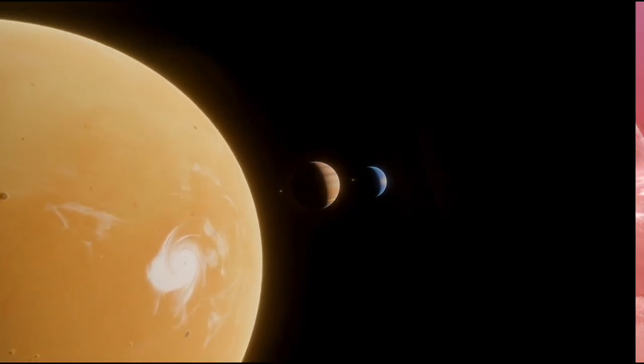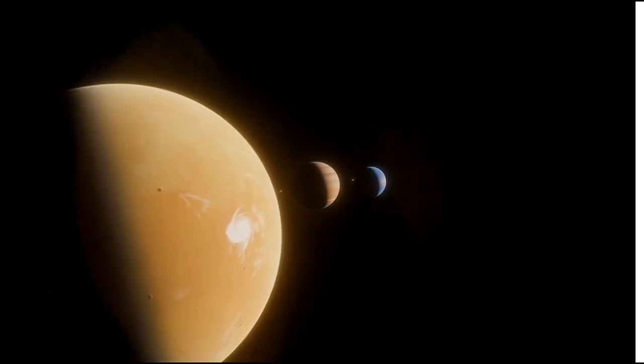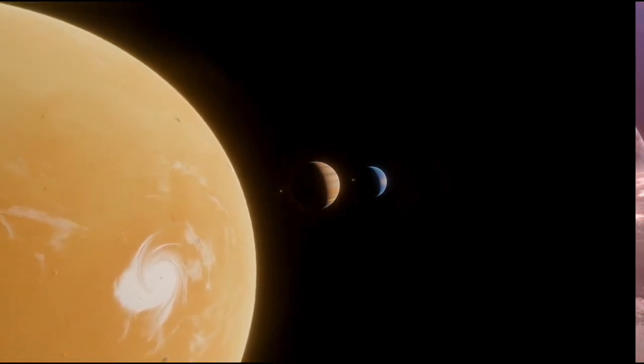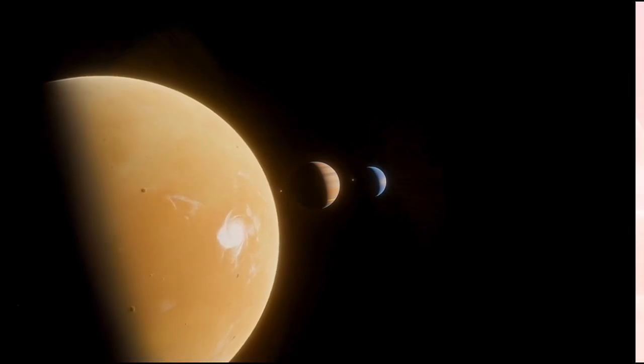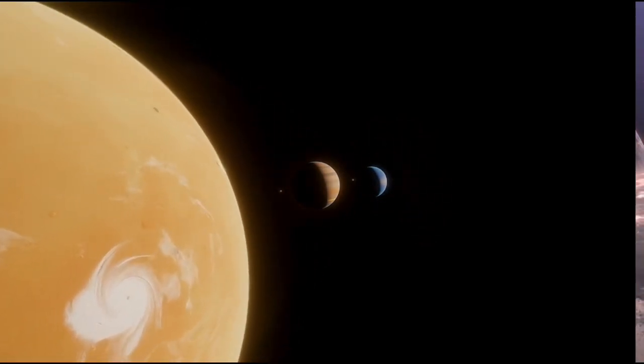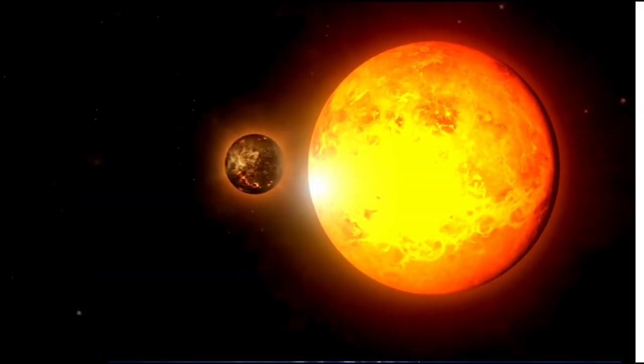Its orbital period is notably brief, lasting just 11.7 Earth days, and it orbits its star at a distance many times closer than Earth is to the Sun. Consequently, one hemisphere of the planet experiences perpetual daylight, while the other remains in everlasting darkness, amplifying its alien and perhaps awe-inspiring nature.